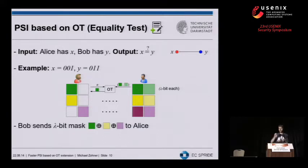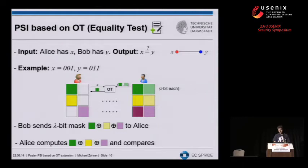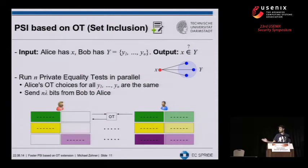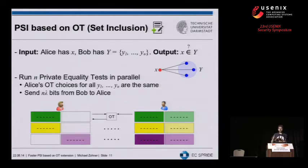As a next step, Bob XORs the strings corresponding to the bits in Y — he takes the 0-string of green, the 1-string of yellow, and the 1-string of magenta, XORs them together, and sends them back to Alice. Alice then XORs the strings she received from the oblivious transfers and compares. If these strings are equal, we know there is a match. We can extend this by increasing the string size to transfer multiple elements of Y at once. The number of oblivious transfers remains the same; we only append strings, which is essentially free. The cost overhead comes when Bob sends N masks back to Alice.